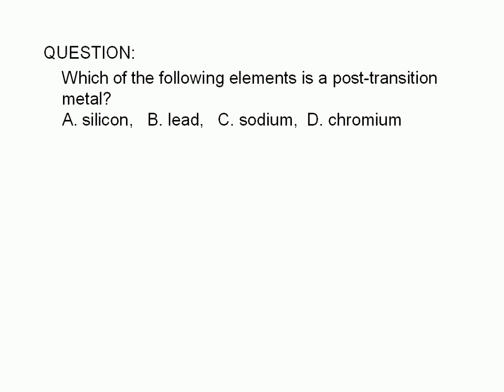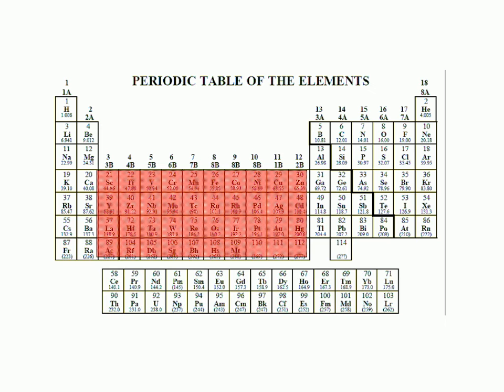The best way to answer this is to refer to the periodic table. The transition elements, or transition metals, are in the highlighted section of the periodic table shown here. The post-transition metals are the metals belonging to groups 3A, 4A, and 5A that immediately follow the transition metals.